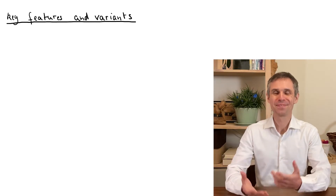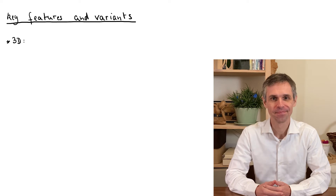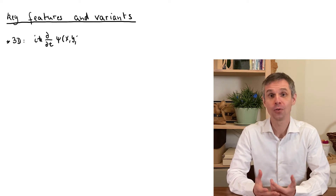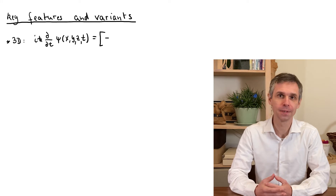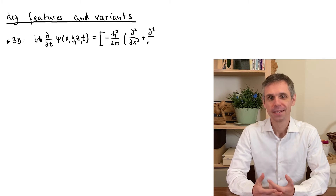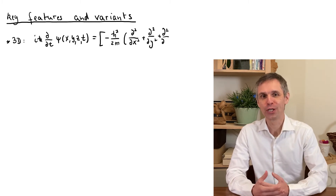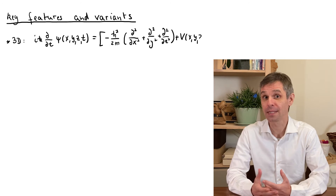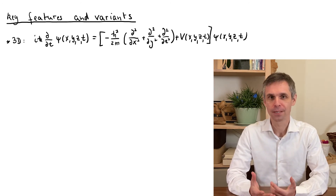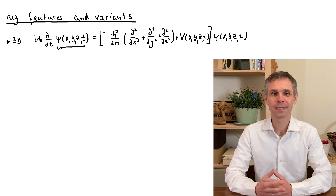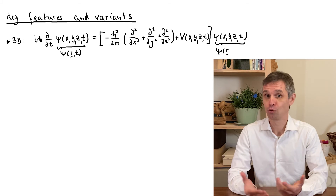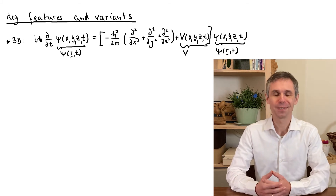Here are some key features of the Schrödinger equation. First of all, it is easy to write it down in a more general form for a point particle moving in three dimensions, accounting also for situations where the potential energy depends on time. We can write this in a slightly more compact form when we group the spatial coordinates into a position vector and replace the derivatives by the Laplace operator.